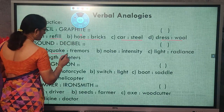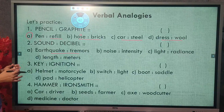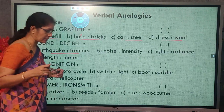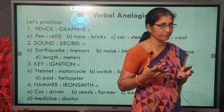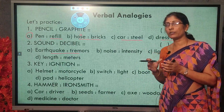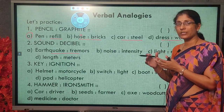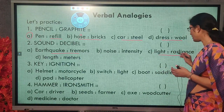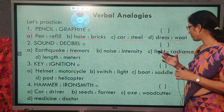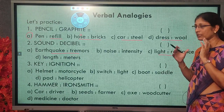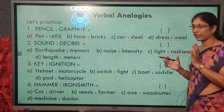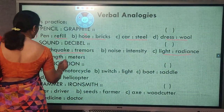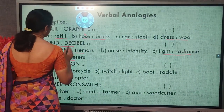Earthquake and tremors — tremors are like waves before or after an earthquake, so that is a different relation. Noise and intensity — intensity describes how strong the noise is, not a unit of measurement. Light and radiance — when light is thick or bright it produces radiance, but again not a measurement unit. Length and meters — length is measured in meters. Sound is measured in decibels; therefore length and meters is the correct answer.